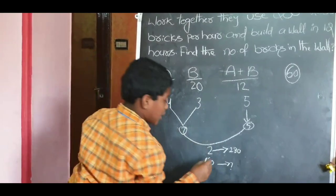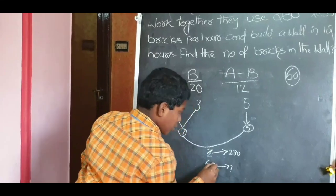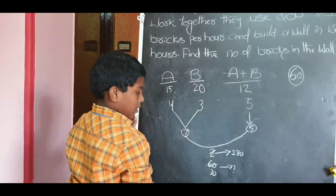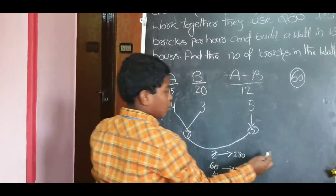Cross multiplication. 2 not there. 2, 30. Now 2, 30 into 280.